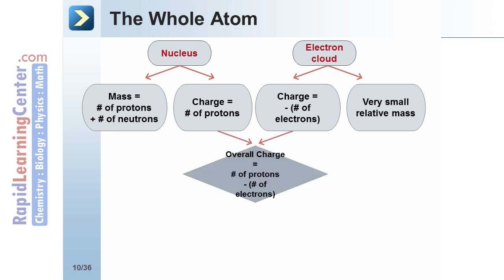The overall charge of the atom can be found by adding the number of protons minus the number of electrons. The overall mass can be considered as essentially the number of protons plus the number of neutrons, because the electrons have such a small relative mass.